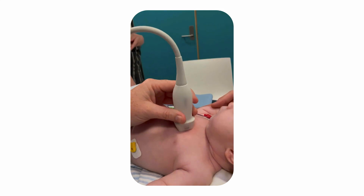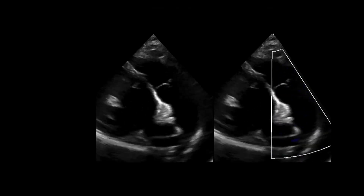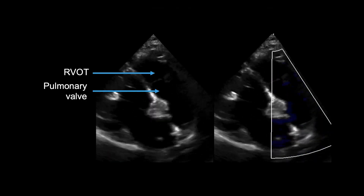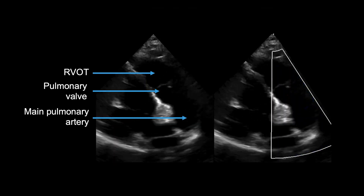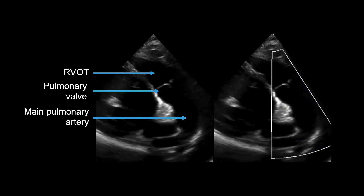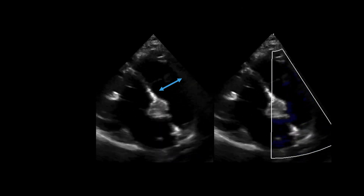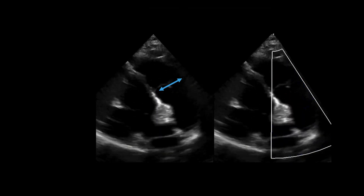If there is any tricuspid regurgitation, this view lets you obtain a continuous wave Doppler for the tricuspid valve gradient. Next, tilt the transducer anteriorly towards the left shoulder with the probe in the same position or rotated slightly clockwise. This will profile the right ventricular outflow tract, pulmonary valve, and the main pulmonary artery. Any abnormalities of the pulmonary valve can be well profiled on both 2D and color Doppler imaging. The pulmonary valve annulus diameter is also best measured in this view, and an accurate pulmonary valve gradient can be optimally achieved with a continuous wave Doppler.